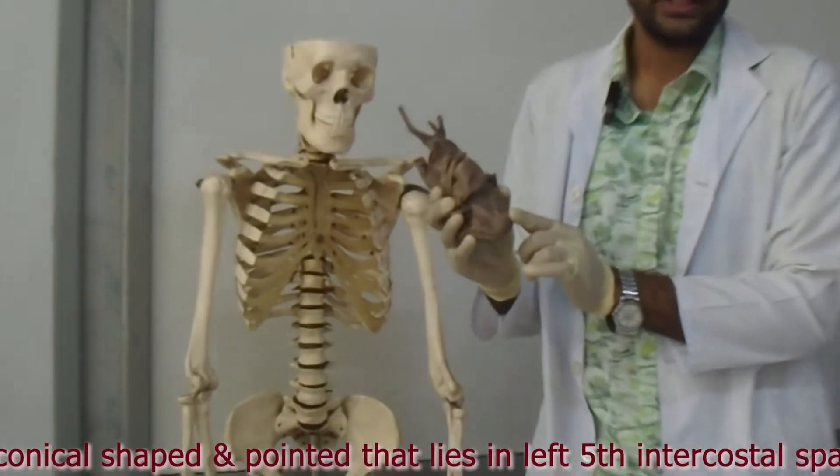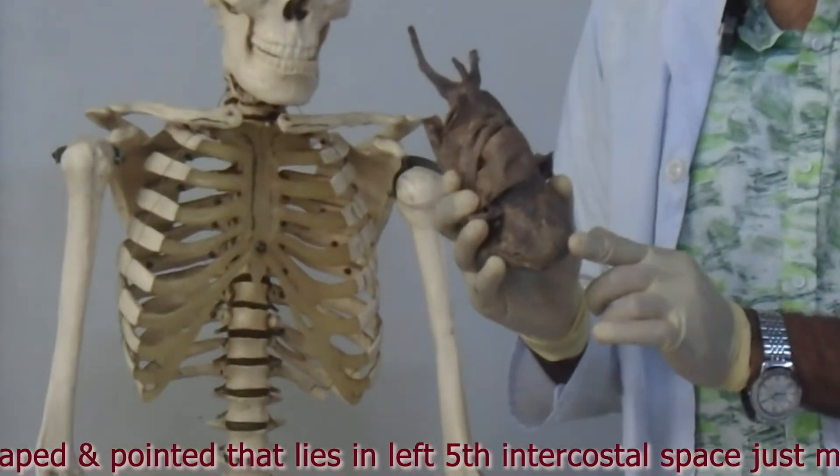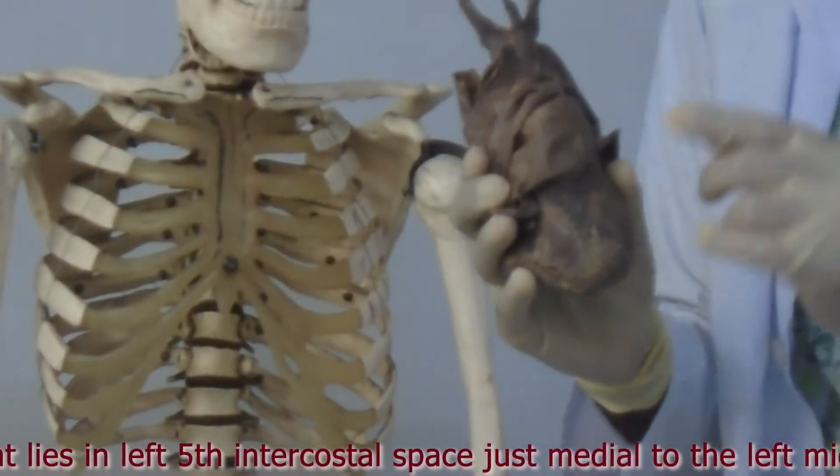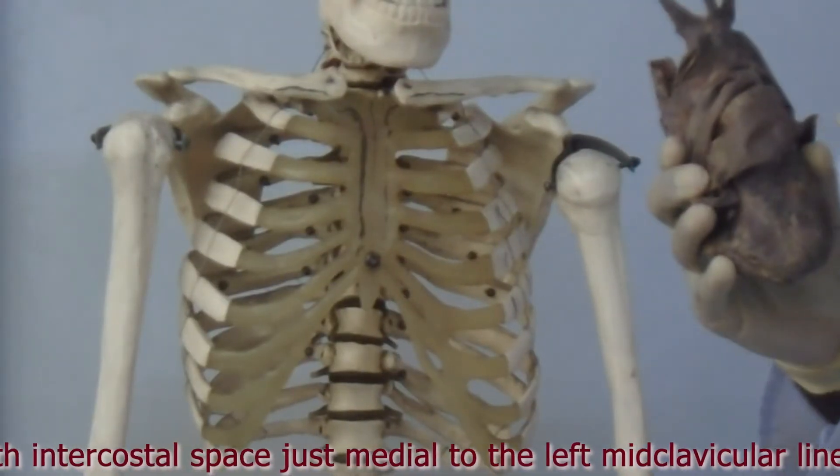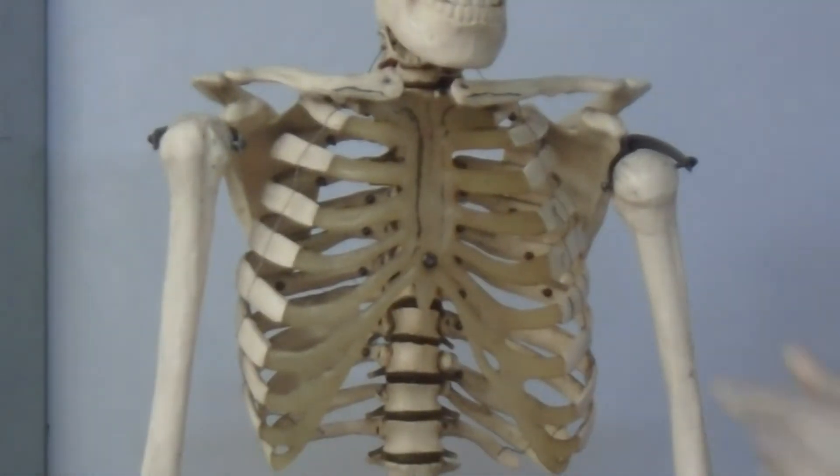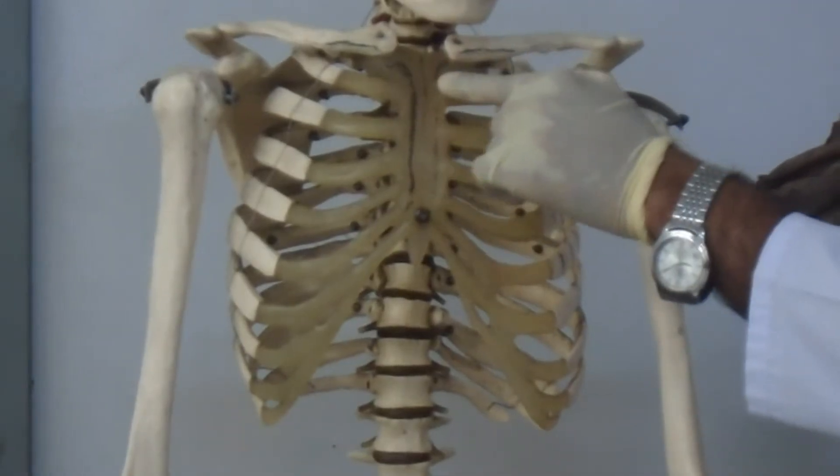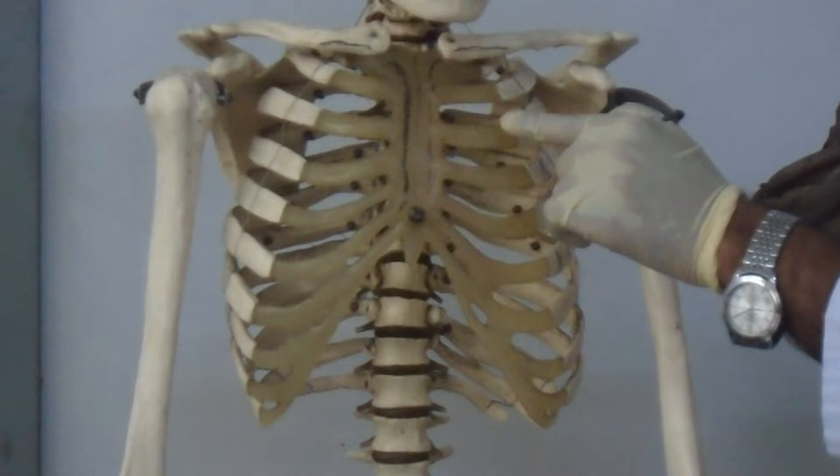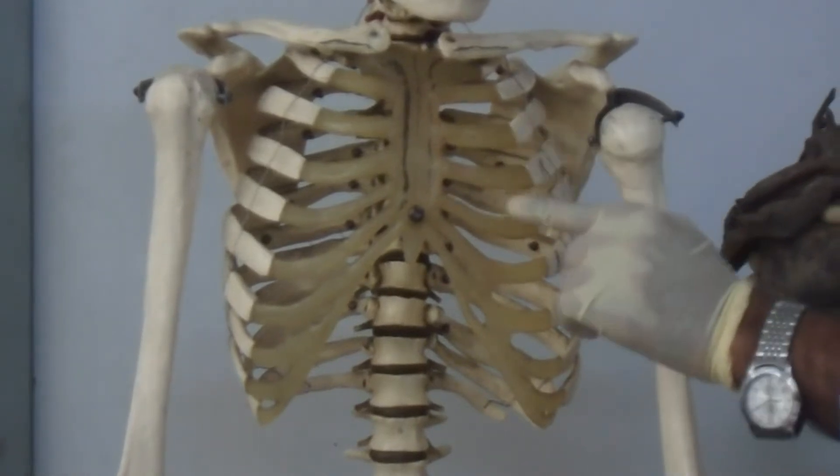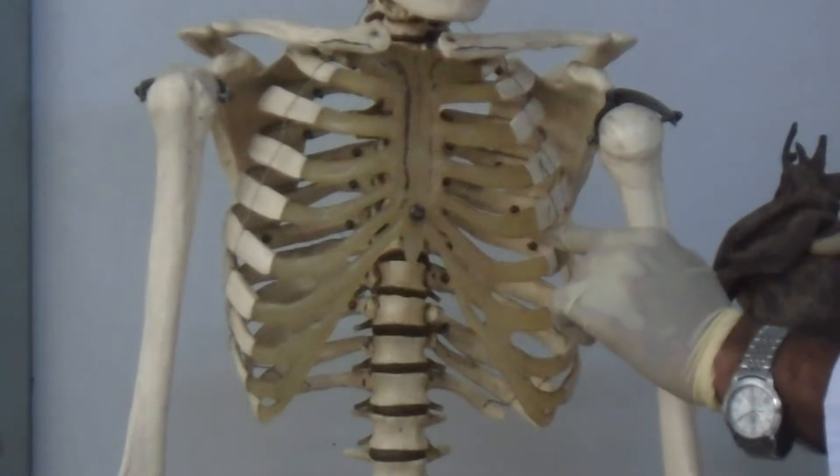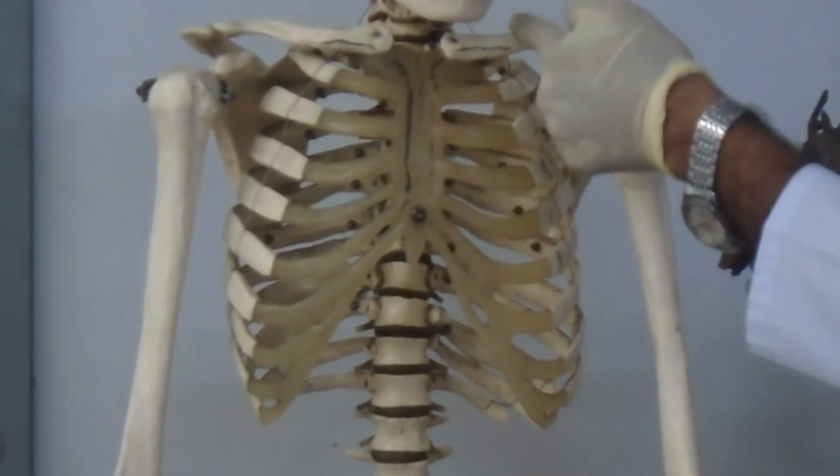This is the left fifth intercostal space, just medial to the left mid-clavicular line. Let's see the skeleton. Here is the sternum, the sternal angle, and the left second rib. This is the third rib, this is the fourth rib, this is the fifth rib. Here lies the left fifth intercostal space, and this is the clavicle.